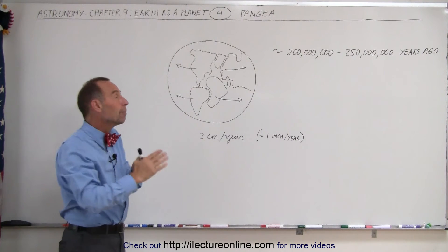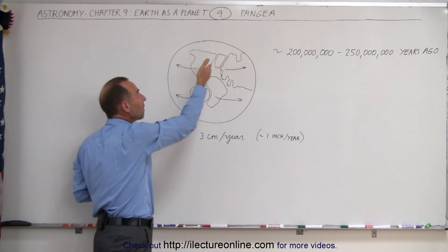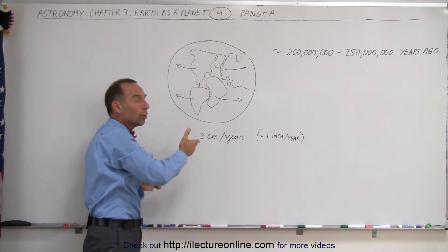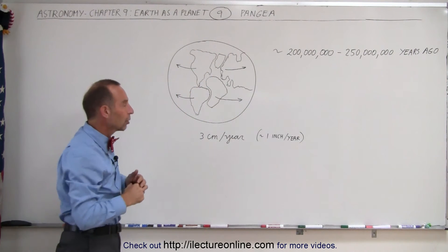And since then, they've been moving apart, creating a huge mountain range all the way down from the North Pole down to the South Pole along what is now known as the Atlantic Ocean.